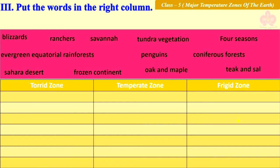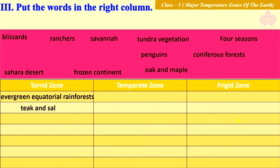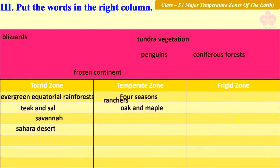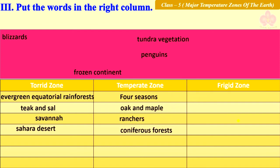In the torrid zone: evergreen equatorial rainforests, teak and sal, savannah, and Sahara desert. In the temperate zone: four seasons, oak and maple, ranchers, and coniferous forests.